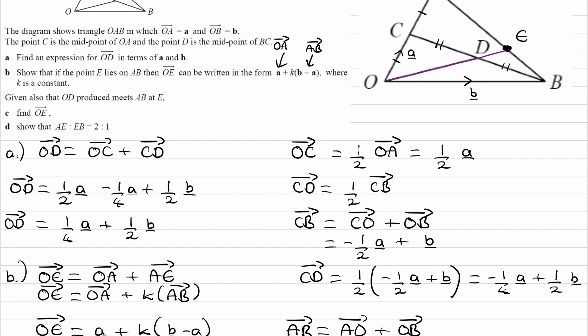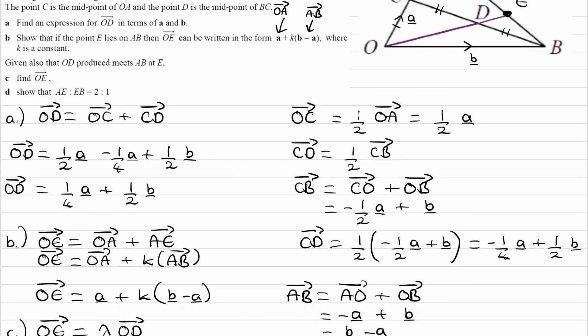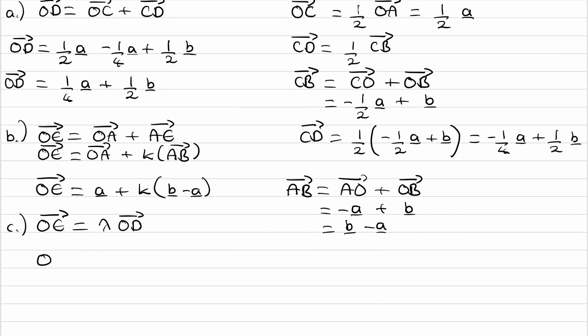OD we worked out earlier, so that's useful. We have OD is a quarter A plus a half B. So then we can say that another way of writing OE is lambda times all of this. So actually I want to insert that lambda in there, so it'd be a quarter lambda A plus a half lambda B.